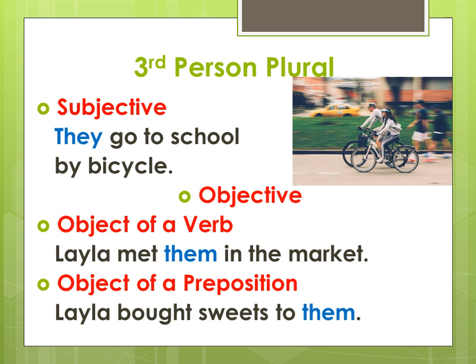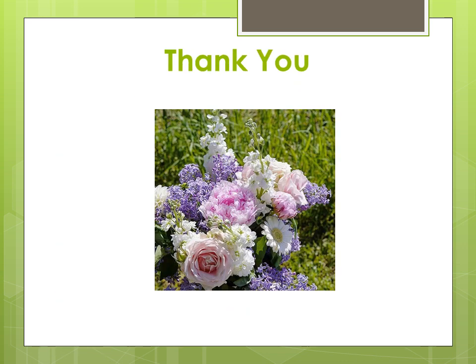Third person plural 'they': 'They go to school by bicycle.' When it is objective, it becomes 'them.' As an object of a verb: 'Leila met them in the market.' As an object of a preposition: 'Leila bought sweets for them.' Thank you.